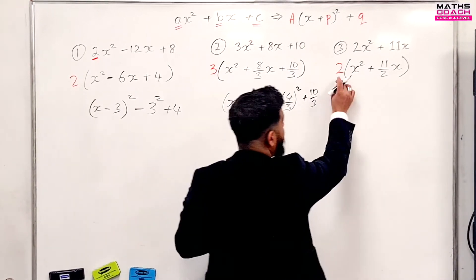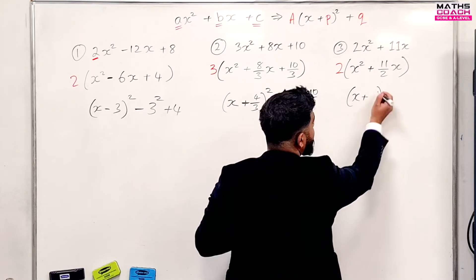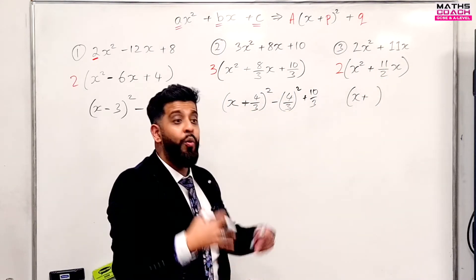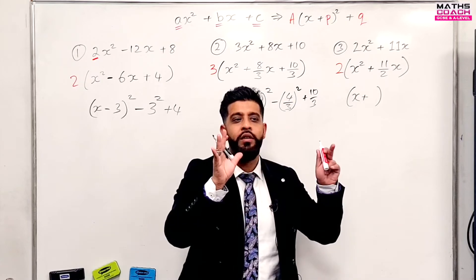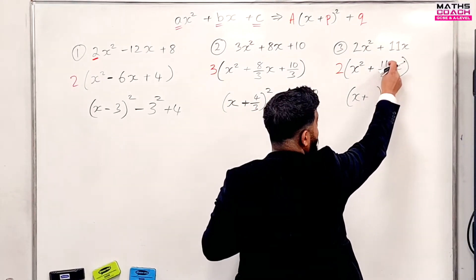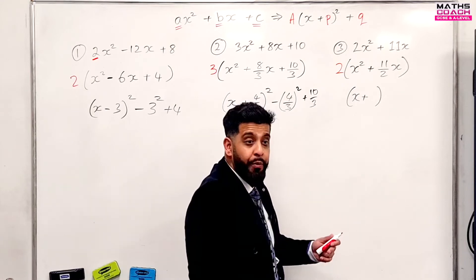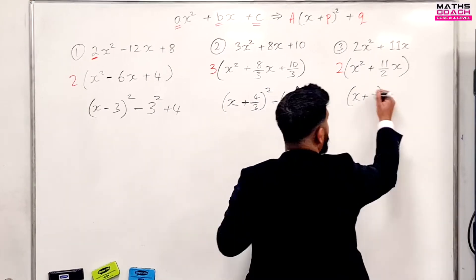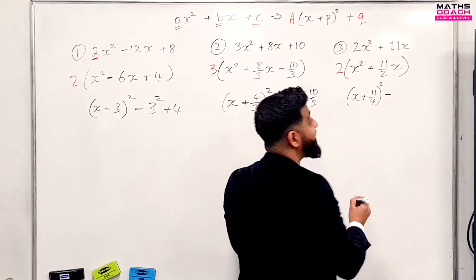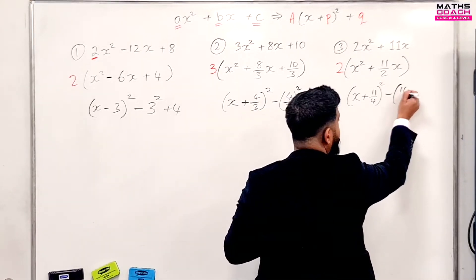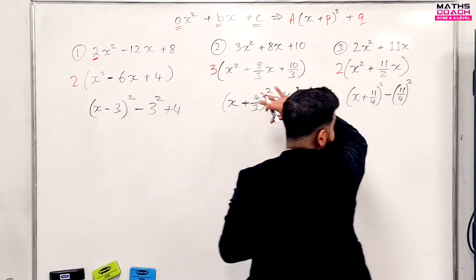Now let's do this on the last one. Once again, ignore the 2. We have an empty bracket, we do x, and we have a plus. And 11 over 2 is a fraction. We can treat it like a decimal — 5.5 divided by 2 — but avoid that, just use fractions as much as possible. So we're going to have 11 over — we multiply the denominator by 2 — so it's 11 over 4. Can we simplify 11 over 4? No, we can't. So we leave it, and then we square it and take away 11 over 4 all squared. This one doesn't have a constant term, so you leave it as is.